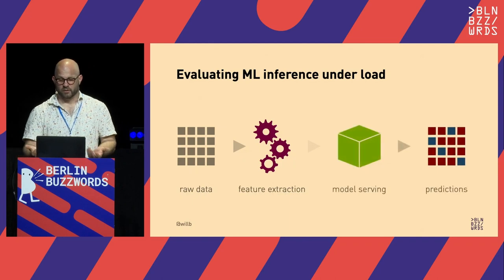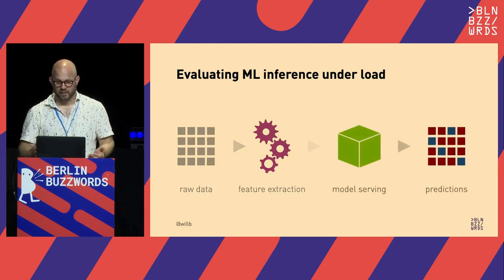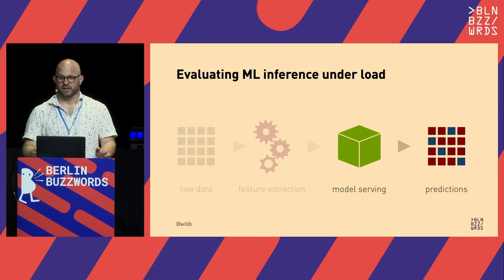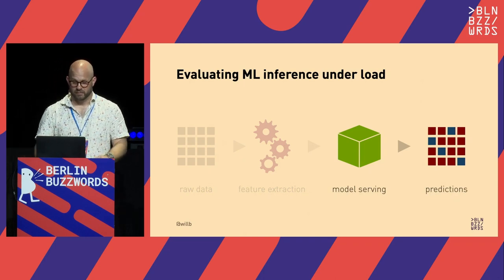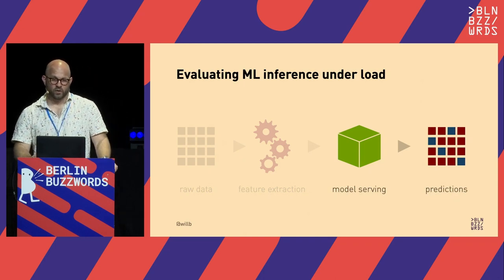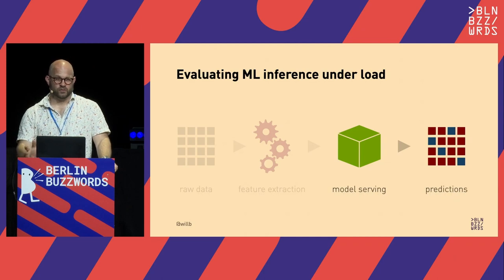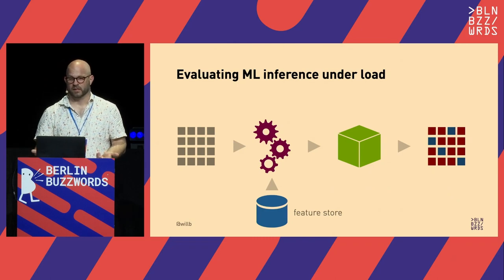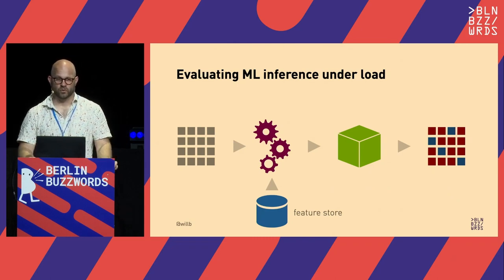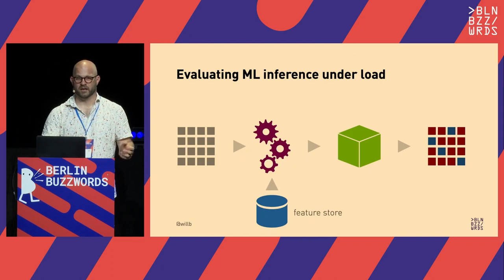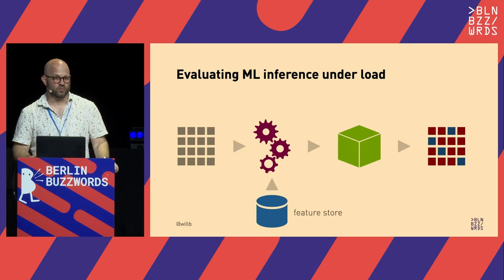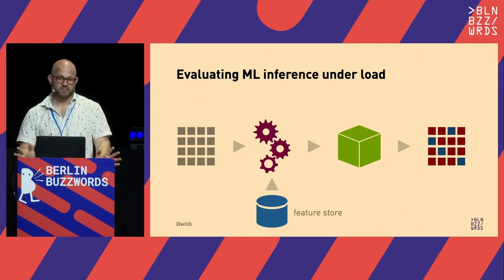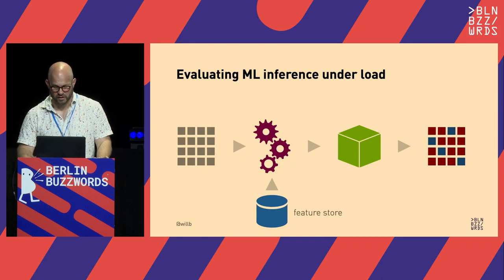We can evaluate the model serving part independently by generating different synthetic datasets in the feature space. We can also, using techniques similar to those for modeling database workloads, test feature store interactions — assembling features from dynamically arriving data and from lookups. Getting these pipelines right can be very tricky, so being able to test them before production is valuable.